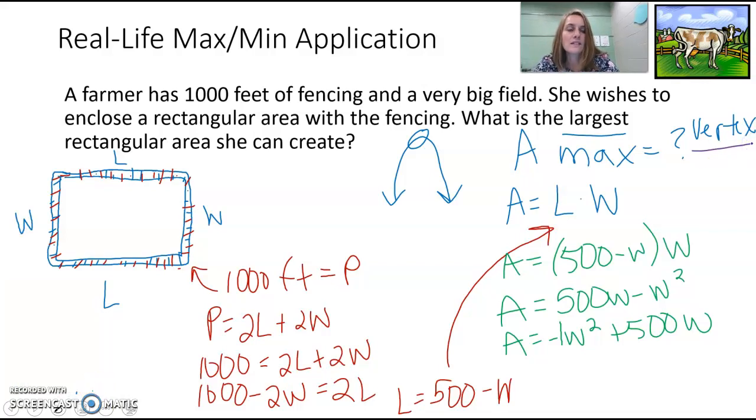To find the vertex, we would do x equals negative b over 2a. Or w equals negative b over 2a. And our b here is 500, so negative 500 over 2 times our a, which is negative 1. Negative divided by negative makes a positive. 500 divided by 2 is 250.